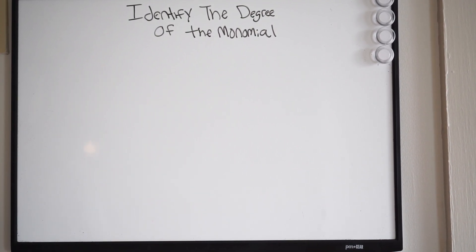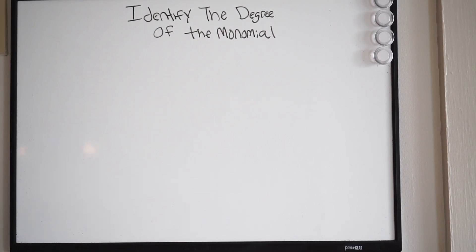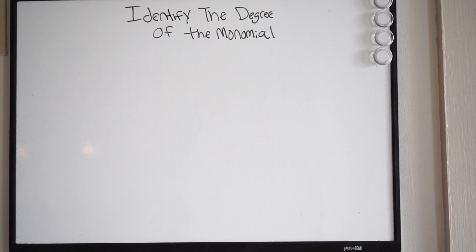Alright guys, so we're going to be talking about chapter 6 now, so we're moving on. And the first question being asked of us in chapter 6 is identify the degree of a monomial.